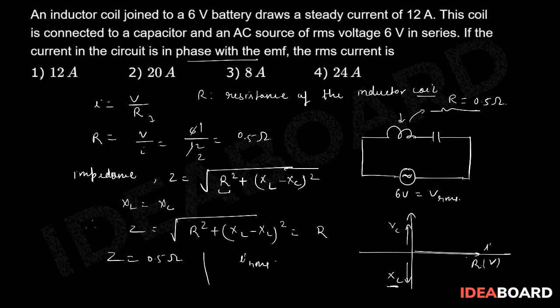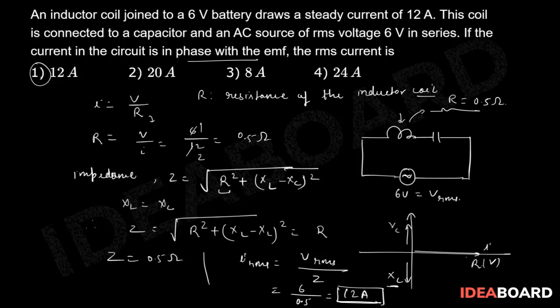Which gives us that I_RMS is equal to V_RMS divided by Z. That means we used a 6 volt EMF, which is V_RMS, divided by 0.5, which gives us 12 ampere. So 12 will be the answer. Which option is correct? First option is the right choice.